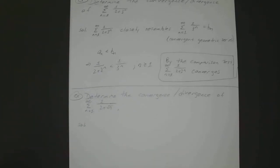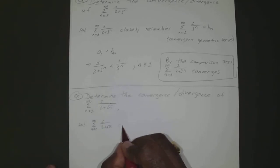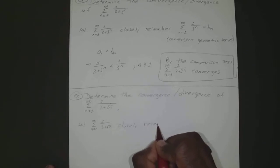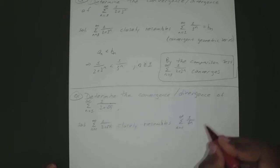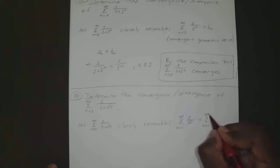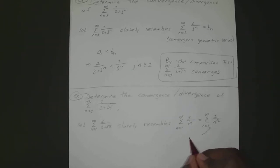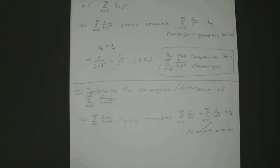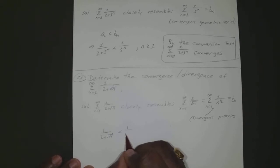We can see this closely resembles 1 over square root of n. The sum from n equals 1 to infinity of 1 over square root of n is 1 over n to the 1/2 power. Looking at the p-series, p is less than or equal to 1, so it diverges — it's a divergent p-series. We'll let that be our b sub n. So if we try 1 over 2 plus square root of n less than 1 over n to the 1/2...